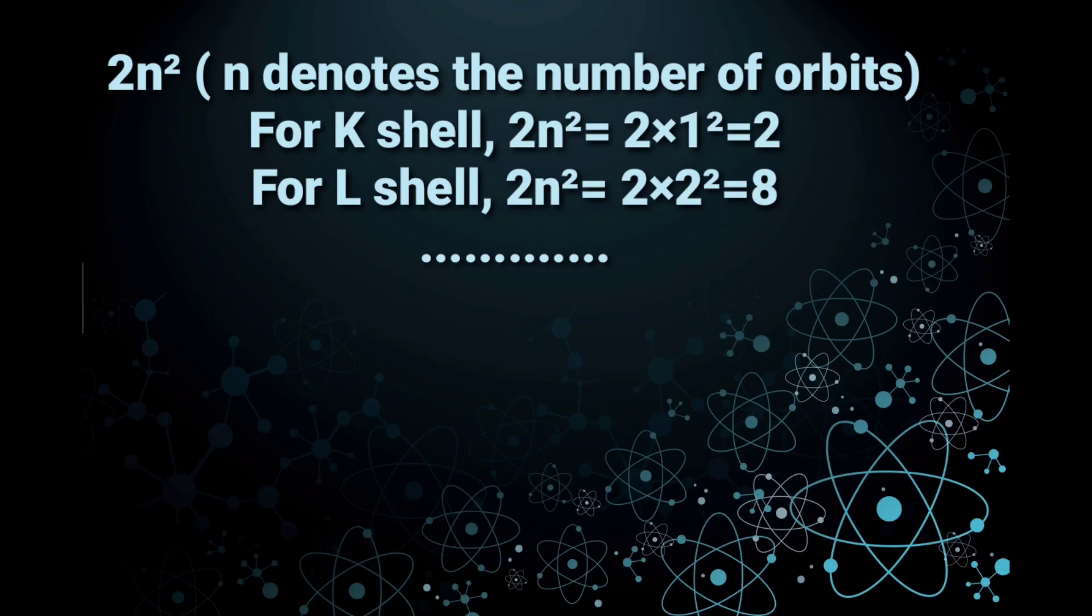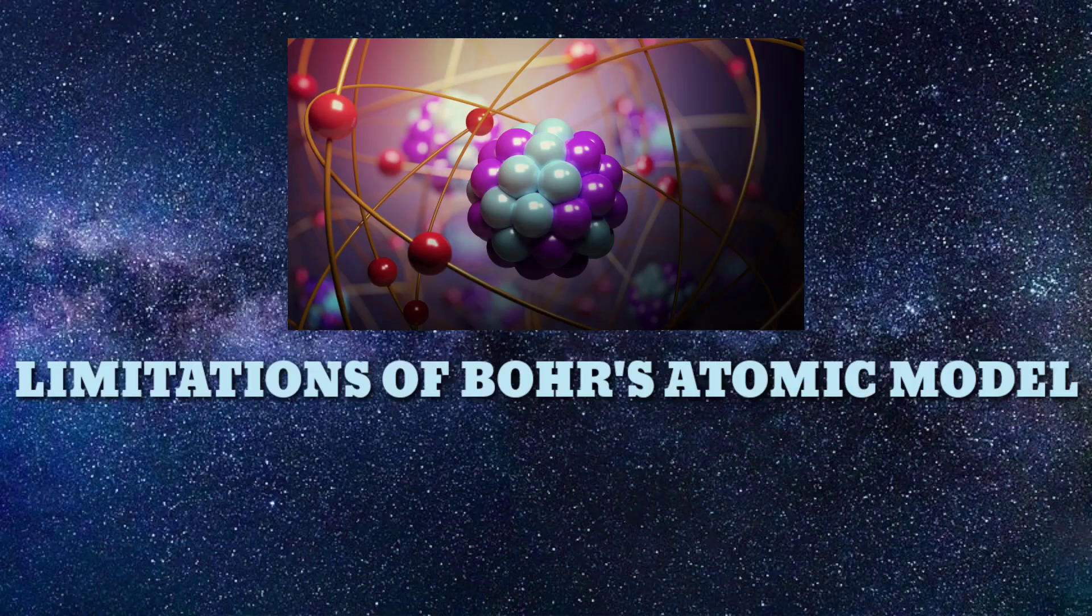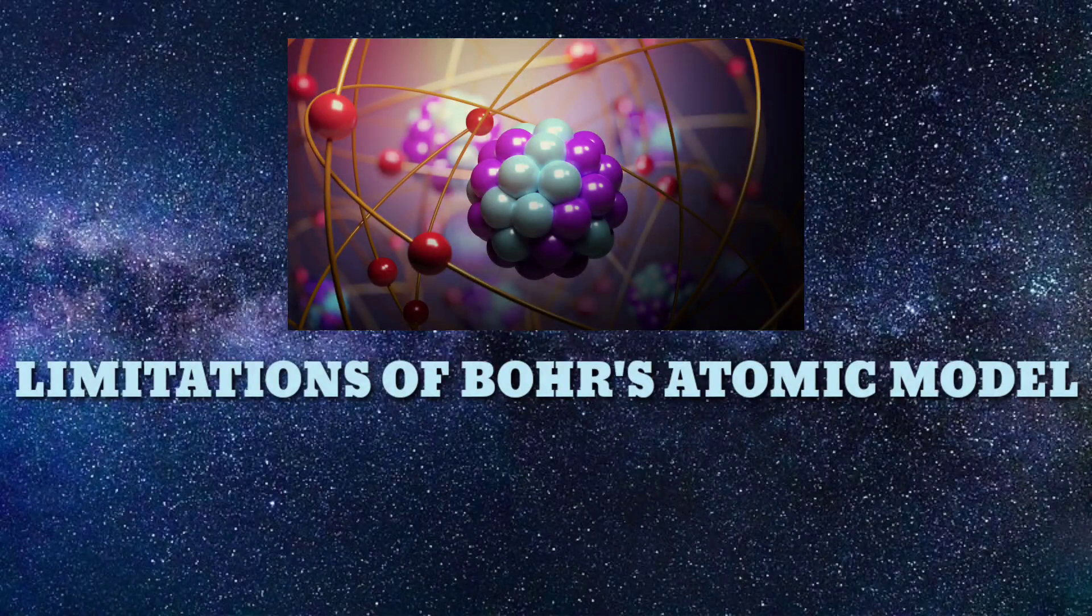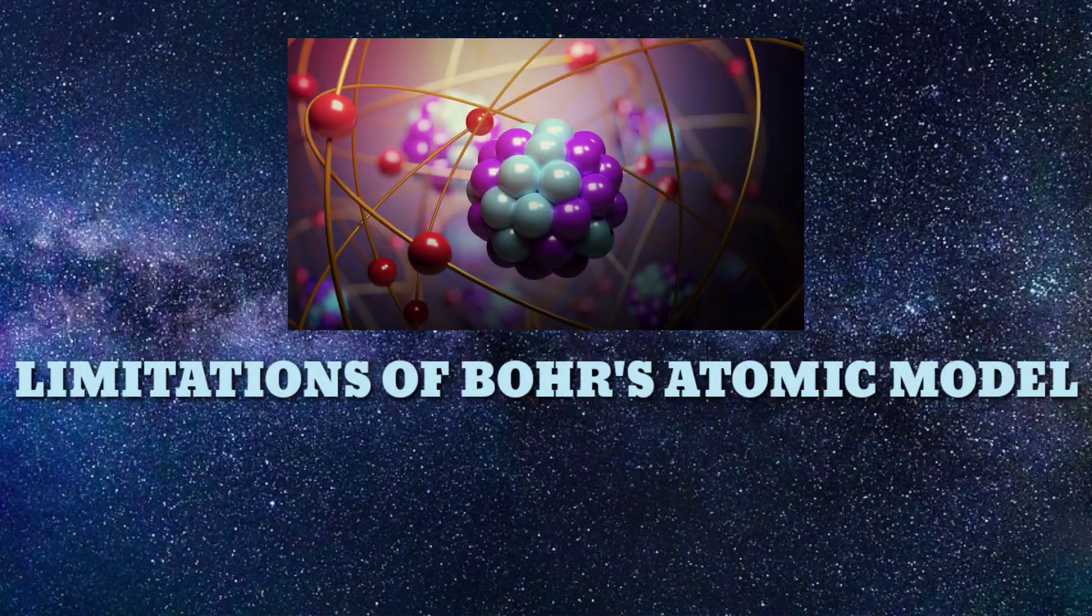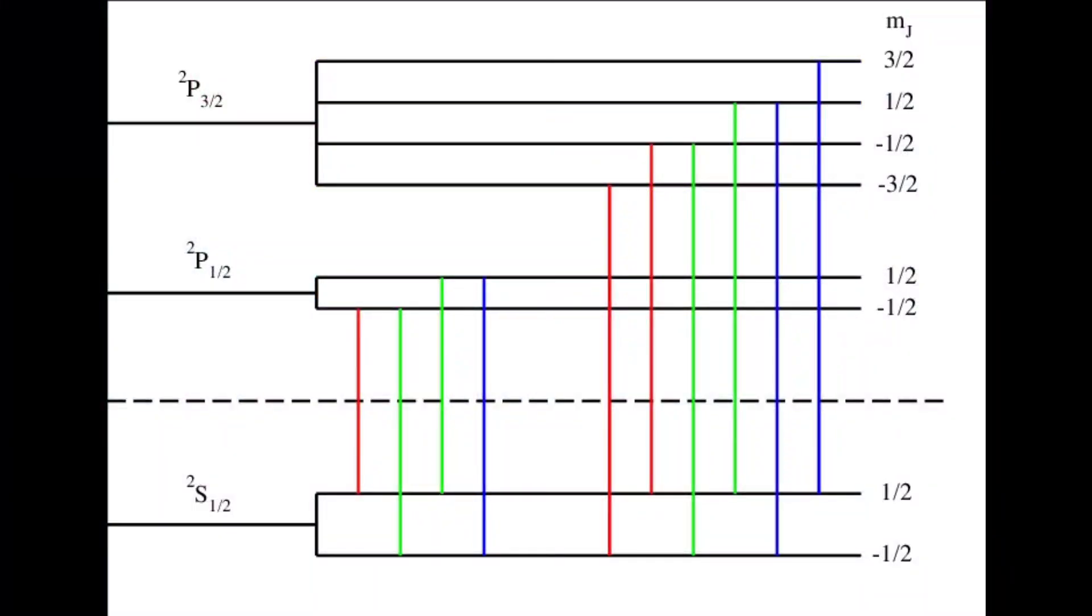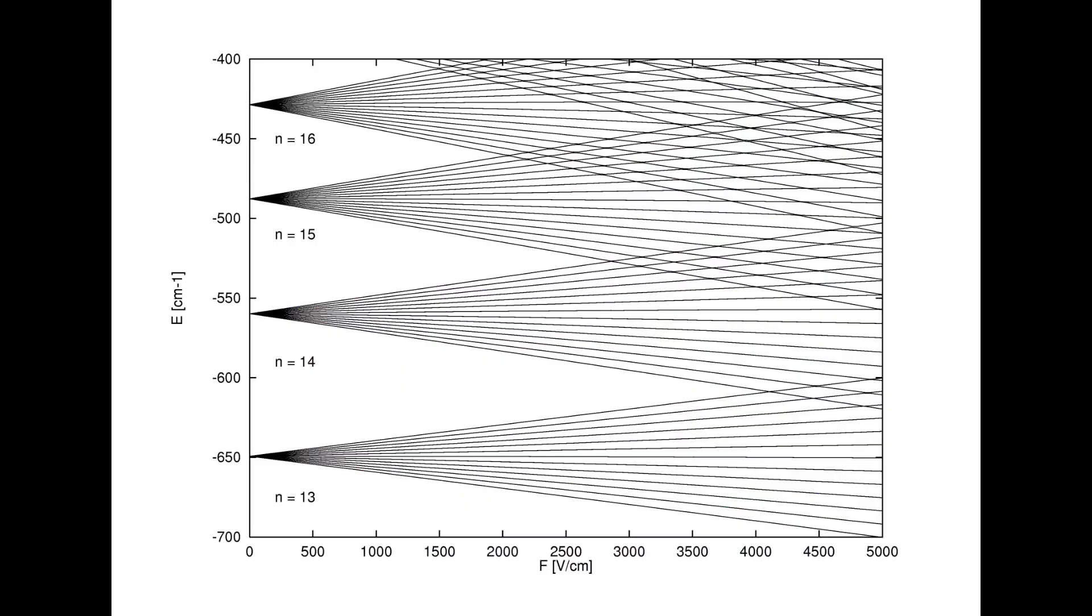In this way we can determine the maximum number of electrons. But the model had some limitations. The limitations of Bohr model of an atom are: 1. Bohr's model of an atom failed to explain the Zeeman effect, the effect of magnetic field on the spectra of atoms. 2. It also failed to explain the Stark effect, i.e., the effect of electric field on the spectra of atoms.